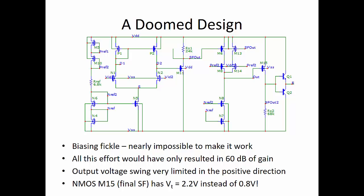That final NMOS had a threshold voltage of about 2.2 volts instead of 0.8 volts. In red are the DC node voltages, and again, this was an overly complicated design that did not work.